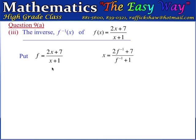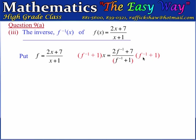When we form the inverse function, the range of the function becomes the domain of the inverse function, and the domain becomes the range, represented by f to the minus 1. We need to transpose the function to make f to the minus 1 the subject. To get the denominator term out, we multiply both sides by f to the minus 1 plus 1. This cancels the denominator, and expanding gives x times f to the minus 1 plus x equals 2 times f to the minus 1 plus 7.